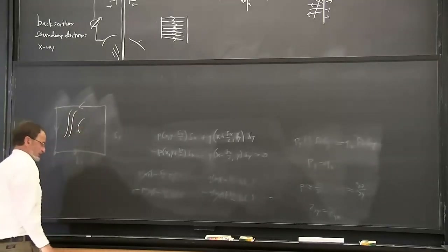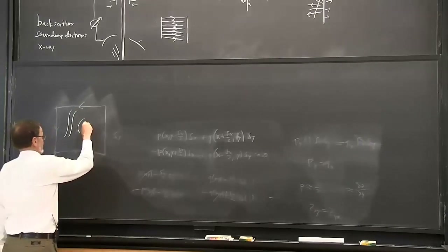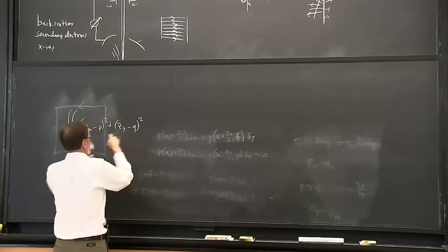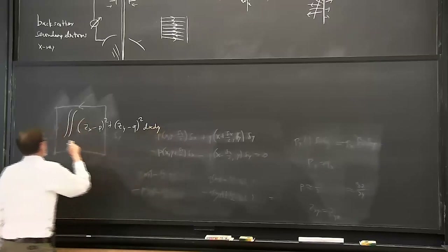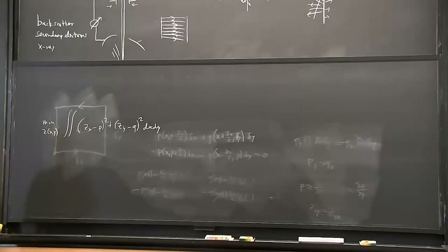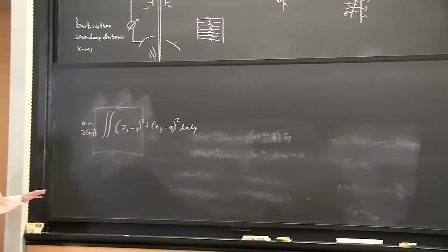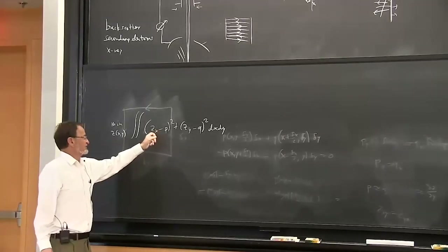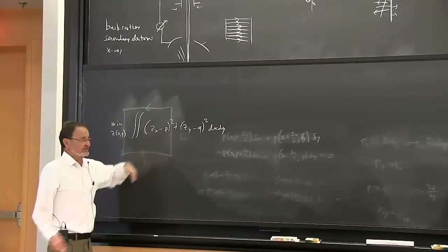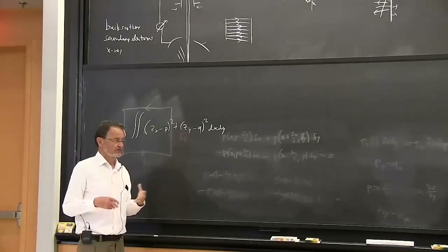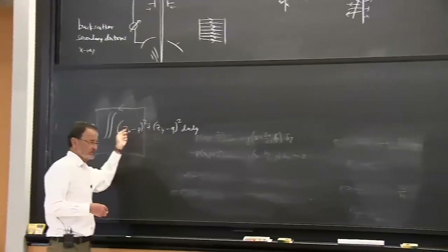We're trying to find a surface Z such that the error is as small as possible. Ideally, if there was no measurement error and we had the correct surface, there would be a Z such that its X derivative matched the P we computed from the image and its Y derivative matched the Q. But because of measurement noise, we expect that will not be possible, so let's at least make it as small as possible.